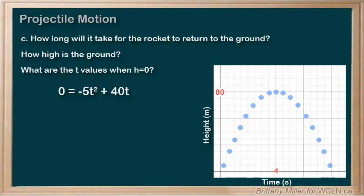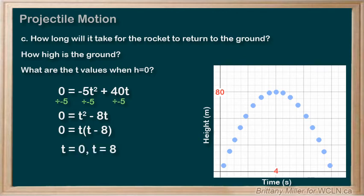So, 0 = -5t² + 40t. We can divide both sides by -5, effectively getting rid of it. So, we get 0 = t² - 8t and then we can factor out a t to get 0 = t(t - 8). So, t = 0 and t = 8 will be our solutions.